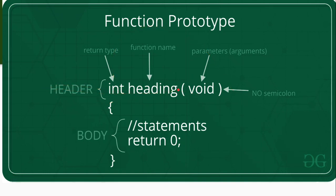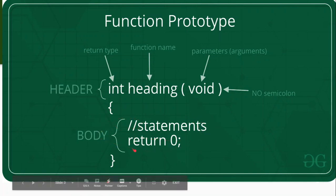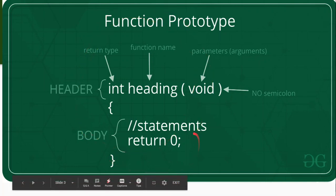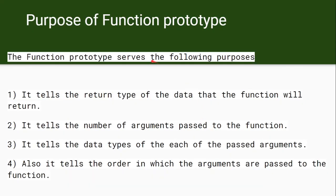When you start the function definition, there is no semicolon — this is the header of the function. The function definition starts with an open brace, contains all the statements of the function, includes a return statement, and ends with a closing brace. This is the whole function body.